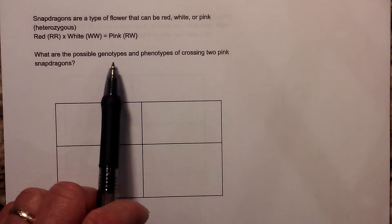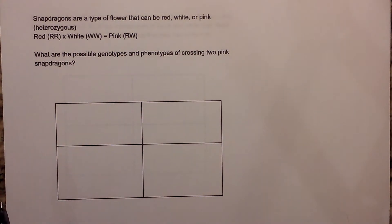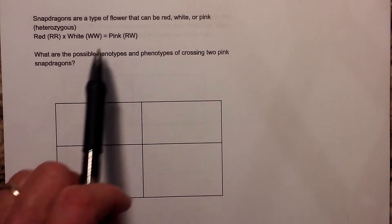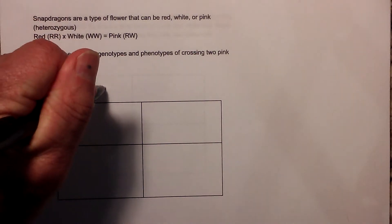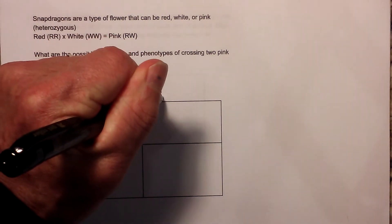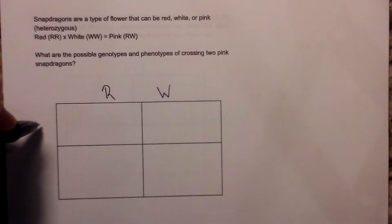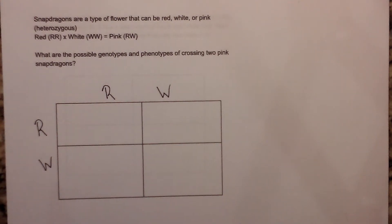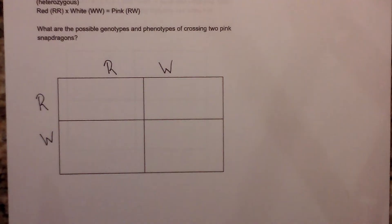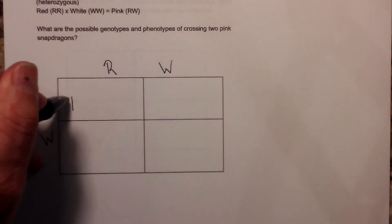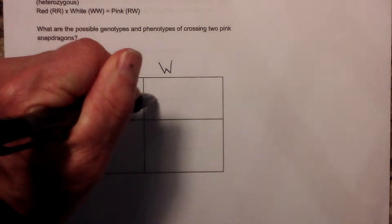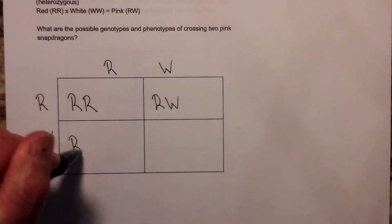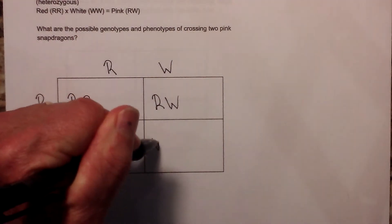What are the possible genotypes and phenotypes of a cross of two pink snapdragons? So since it's pink, we know one parent is going to look like this. The other parent will look like this because it is pink. Then we just like a normal Punnett square fill in the boxes.